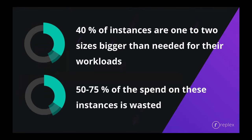To give some context to what we're going to be talking about today — we have a couple of statistics in terms of performance and utilization. One is that 40% of instances are one to two sizes bigger than needed for their workloads. When we say these instances are too big, we're essentially saying they're not being utilized efficiently. Low utilization translates into resource wastage, which in turn means wasted spend. In fact, 50 to 75% of the money being spent on these instances is being wasted.